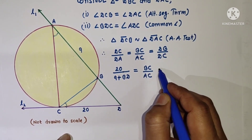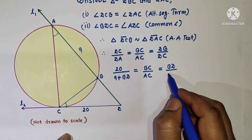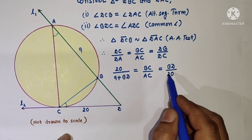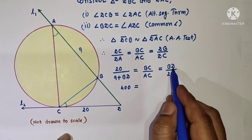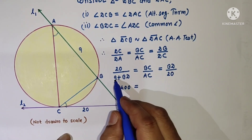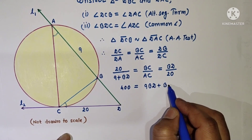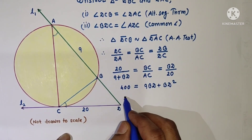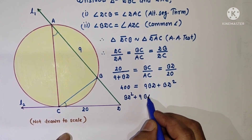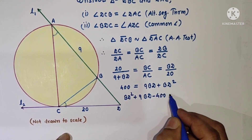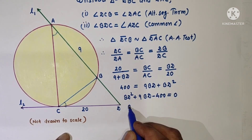BC by AC is to be found, and that equals DB by DC where DC is 20. Taking these two relations: 20 into 20 is 400, which equals BD into (9 plus BD), giving 9·BD plus BD squared. So BD squared plus 9·BD minus 400 equals 0. We have a quadratic equation.